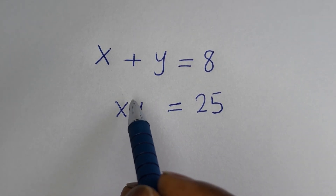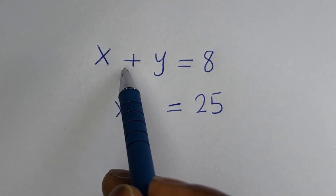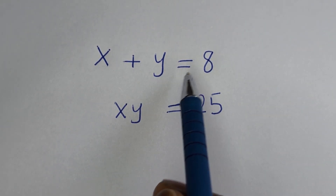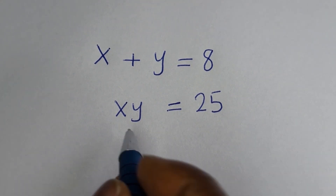Hello. How to solve for S and Y in this equation: S plus Y is equal to 8, and S times Y is equal to 25.